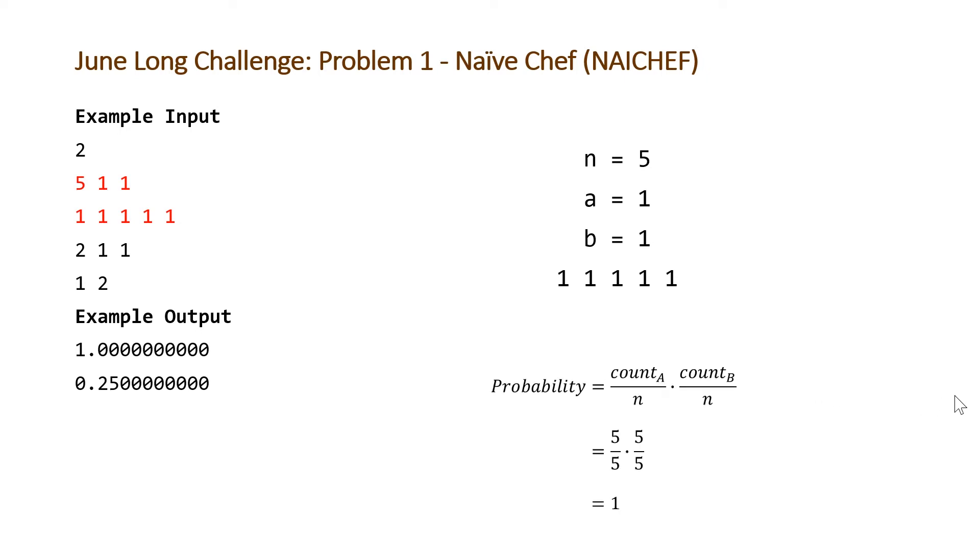So for this example it's gonna be really trivial because every single face is 5 we're just gonna have 5 over 5 times 5 over 5 is equal to 1. For our second example it's also quite trivial we have n equal to 2 which is a 2 face die which isn't really possible so I guess this is some sort of piece of paper that you just throw up in the air and a is equal to 1 b is equal to 2 and each of those values only shows up once so we're just gonna have 1 over 2 times 1 over 2 is equal to 0.25.